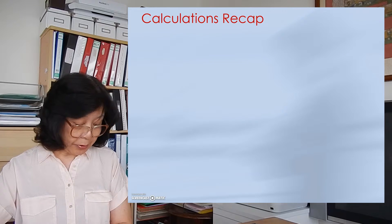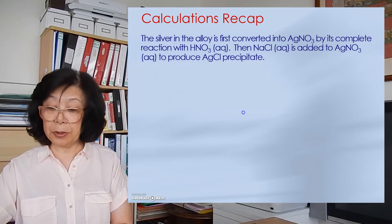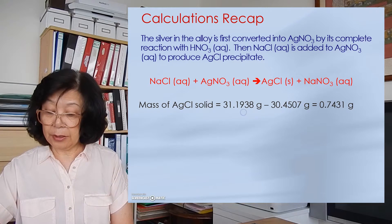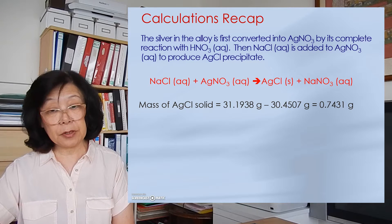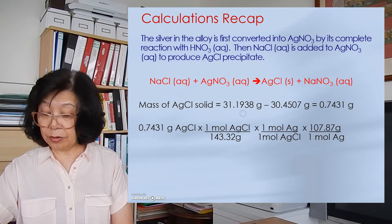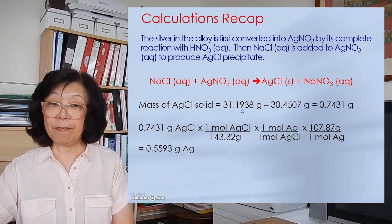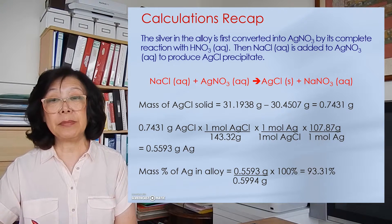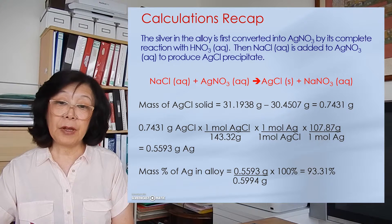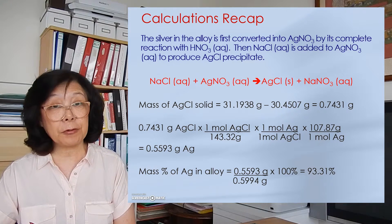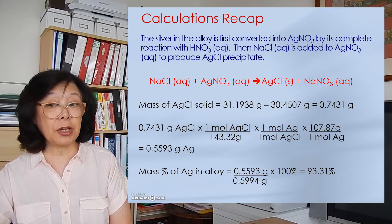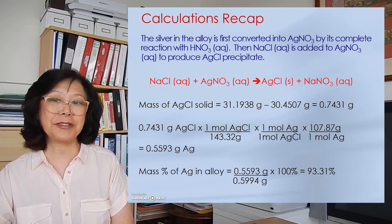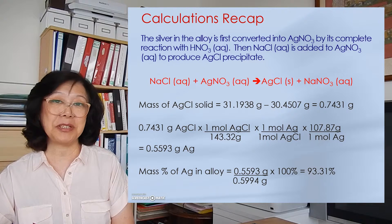Here is a recap of the earlier work. First write the balanced equation, then obtain the mass of silver chloride, then convert it into grams of silver. Finally, divide the mass of silver (0.5593 g) by the mass of the alloy (0.5994 g) to get 93.31% silver in the alloy. This alloy contains quite a high percentage of silver.